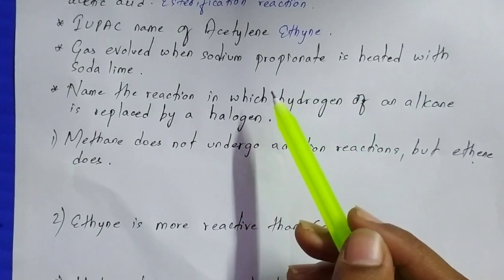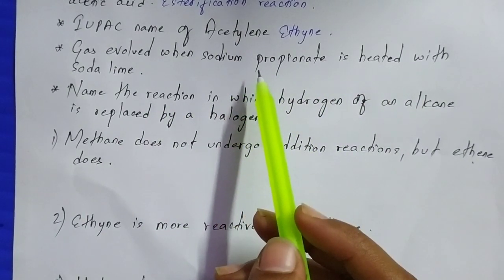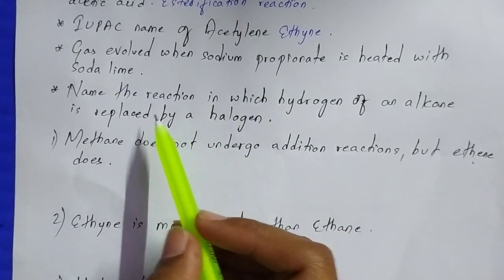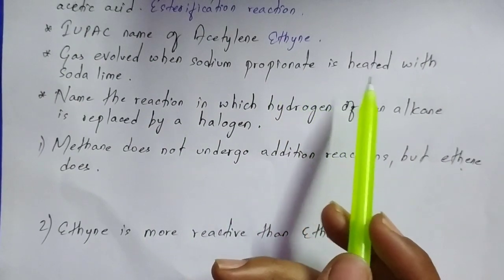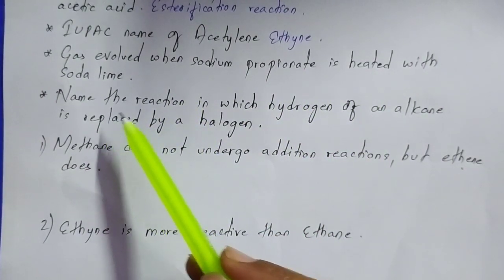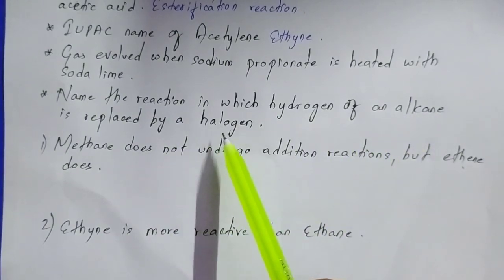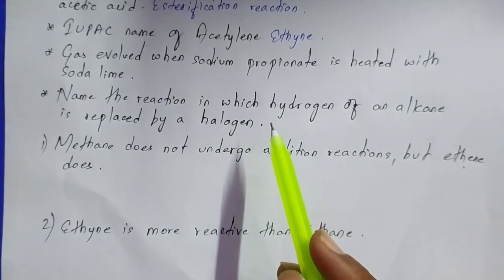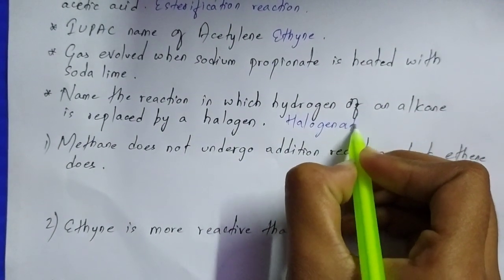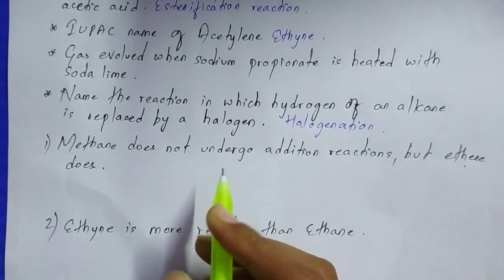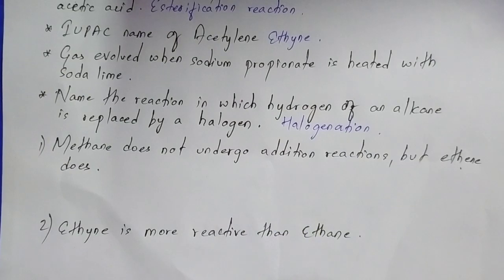Name the gas that is evolved when sodium propionate is heated with soda lime - this is very important. Write your answer in the comment section below. Next: name the reaction in which hydrogen of an alkane is replaced by a halogen. It is halogenation. Halogenation is the process by which hydrogen of an alkane is replaced by a halogen.